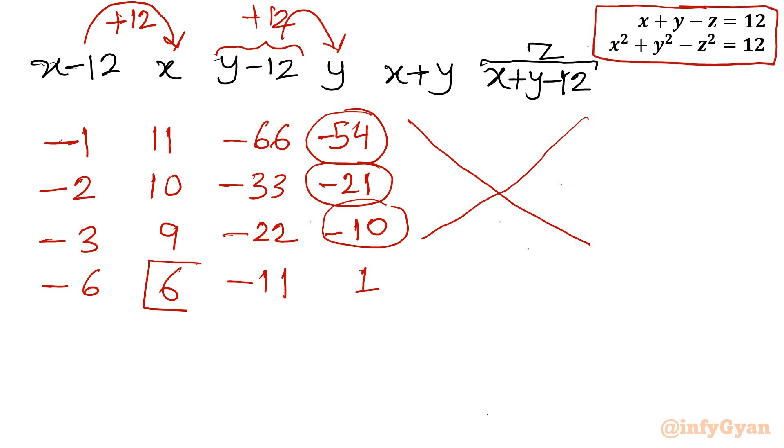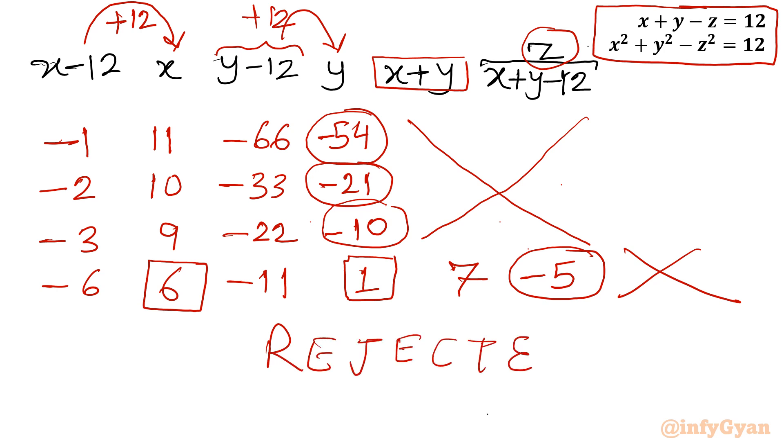Now only this case we can consider: x is 6, y is 1. Let us calculate z. So first I will write our x plus y value, so 6 plus 1 is 7. Now z value if I will calculate, so x plus y minus 12, so 7 minus 12 is minus 5. So because z is negative, this case is also rejected. So from here we won't get any positive integer solution.